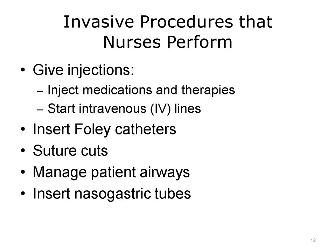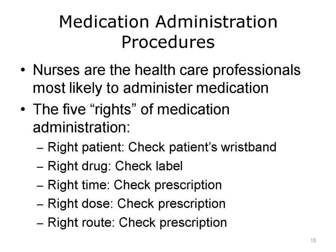Before a medication reaches a patient in a hospital or other institution, it must be ordered and the prescription information must be transcribed and verified. The medication is then dispensed and delivered to the patient, administered usually by a nurse, and the patient's response is monitored and recorded. To make sure medication is given safely, nurses use a checklist called the Five Rights of Medication Administration: Right Patient, Right Drug, Right Time, Right Dose, and Right Route. The Right Dose includes factors such as the amount of medication and the speed of any IV infusion. Examples of routes for medication administration are oral, rectal, and intravenous.